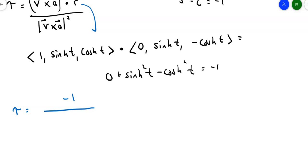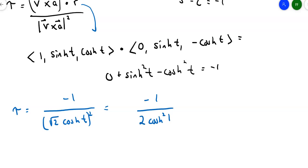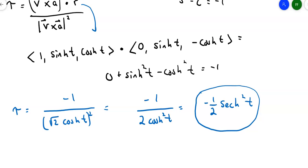The torsion is −1 divided by |V × A|² = −1 / (2 cosh²t) = −(1/2) sech²t. So the torsion is not 0; it changes based on the value of hyperbolic secant. This example illustrates how to work with binormal vectors and torsion, and if you need the torsion formula on the test, it will be provided.